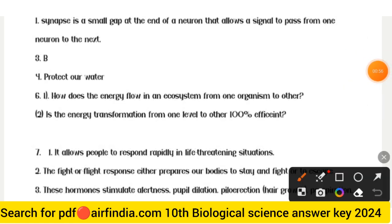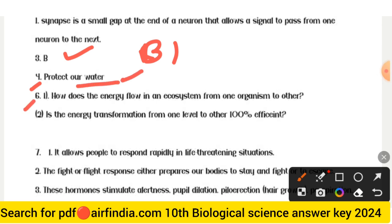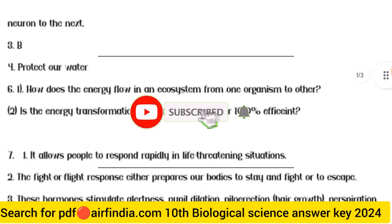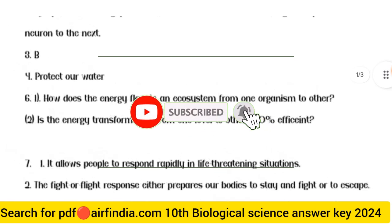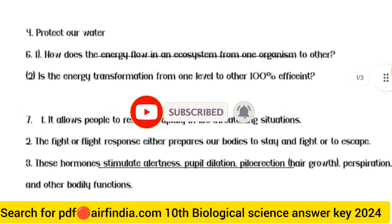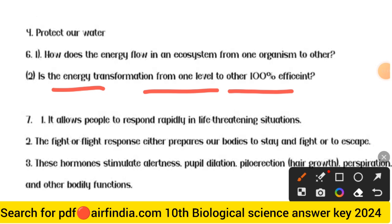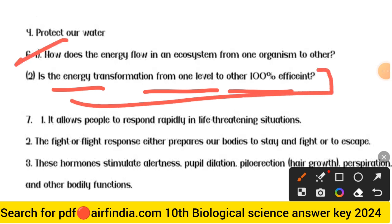Question 3 answer is option B. Question 6 answer: Point one — how does the energy flow in an ecosystem from one organism to another. Point two — energy transformation from one level to another is not hundred percent efficient.